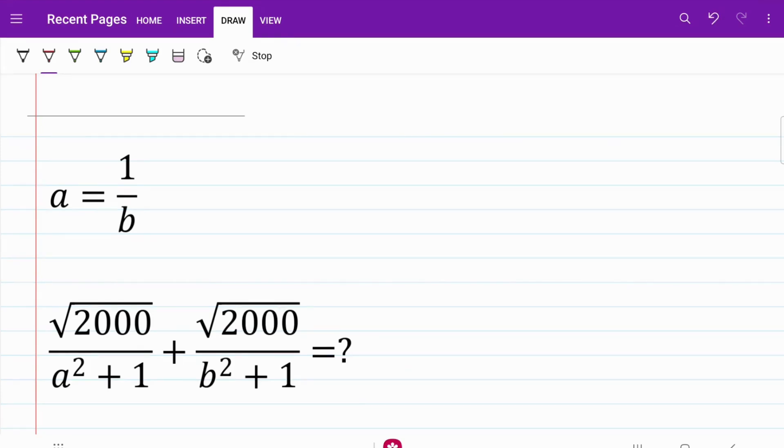In the following question, we are given a is equal to 1 over b, and from there we are trying to find the sum of these two fractions. There are several approaches to solving this problem, some are more tedious than the others, so let's try to find the easiest one.